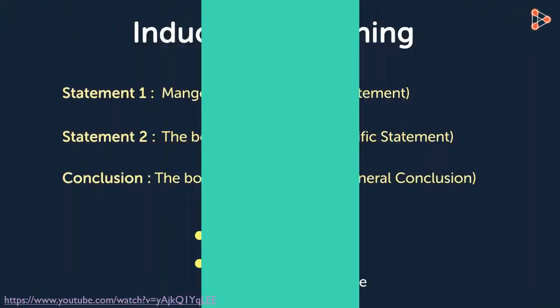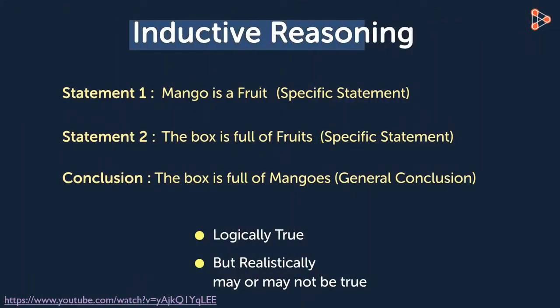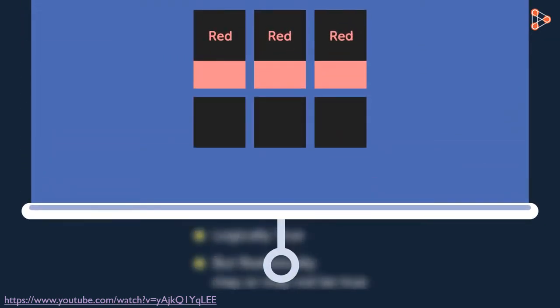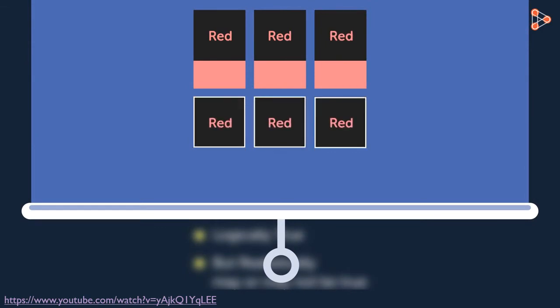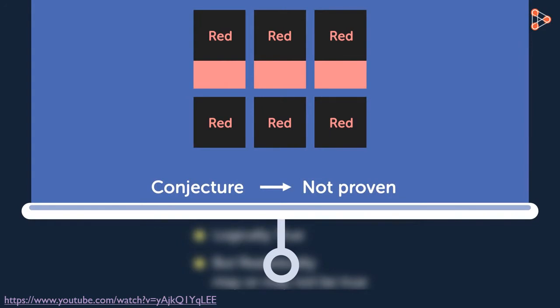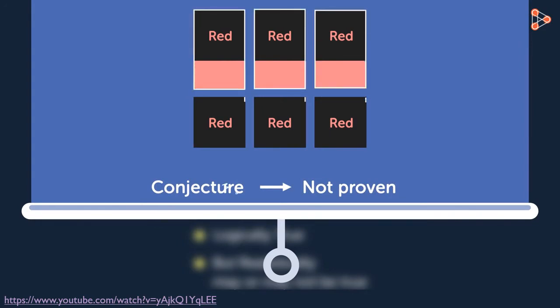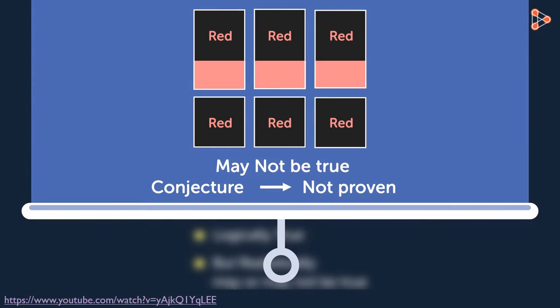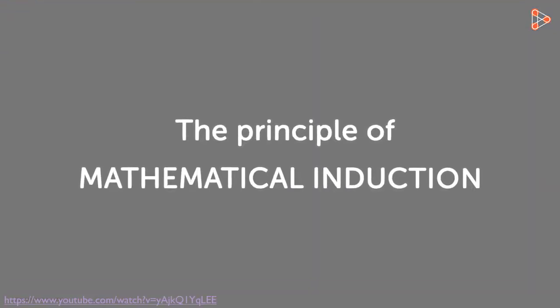Inductive reasoning is frequently used in mathematics. By observing the pattern that exists in a particular case, we induce a general conclusion from that outcome. The conclusion we arrive at based on inductive reasoning is called a conjecture — a hypothesis that has not been proven. Just because we observe a pattern in many cases doesn't mean it holds true for all cases. Conjectures must be proved, and for that the principle of mathematical induction is used.